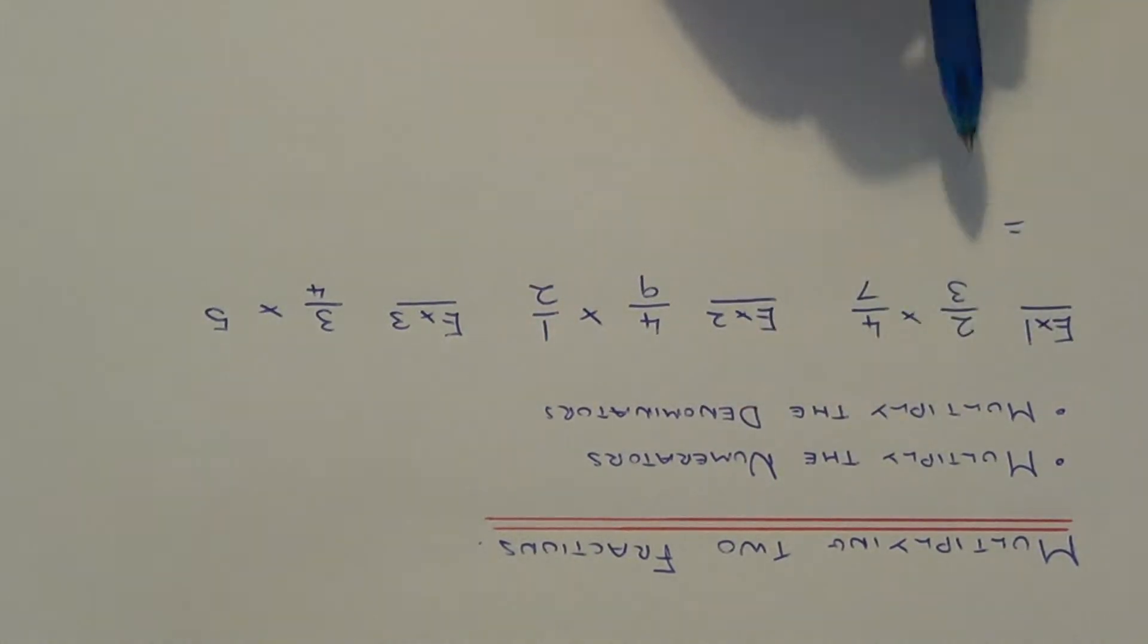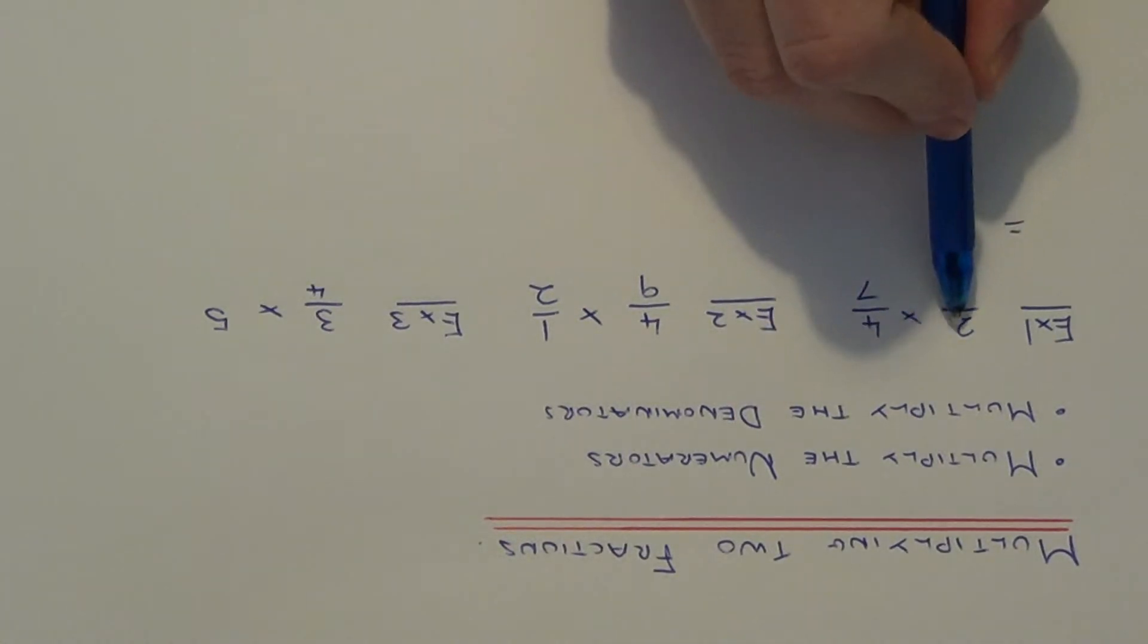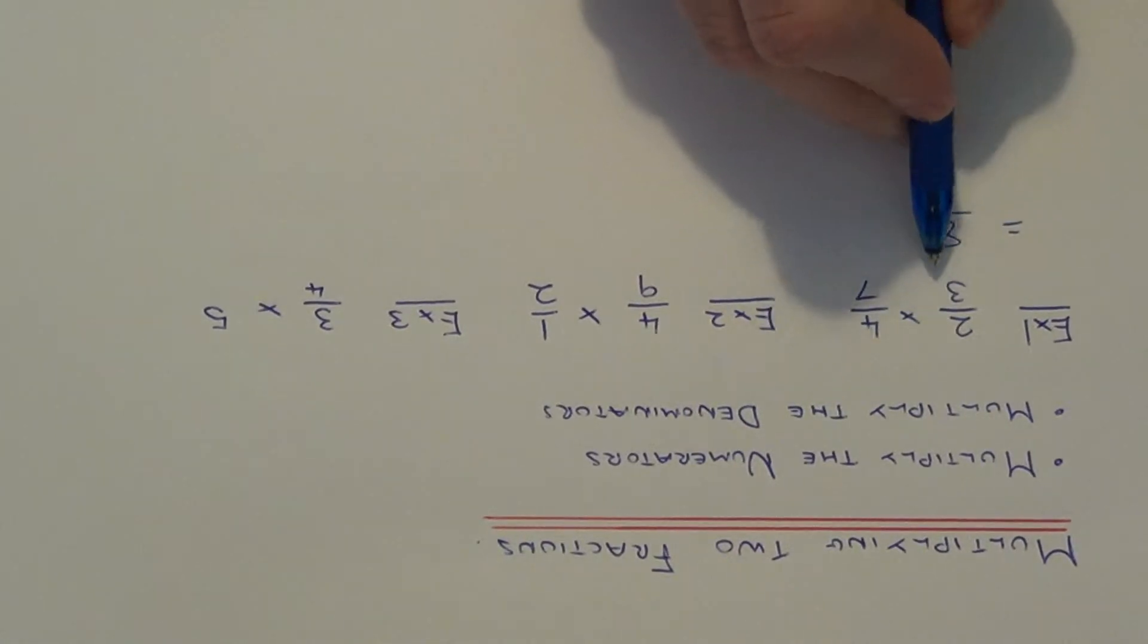Let's have a look at example one. We've got 2 thirds times 4 sevenths. Multiply the numerators, 2 times 4 is 8. Multiply the denominators, 3 times 7 is 21. This cannot be simplified, so this is our final answer.